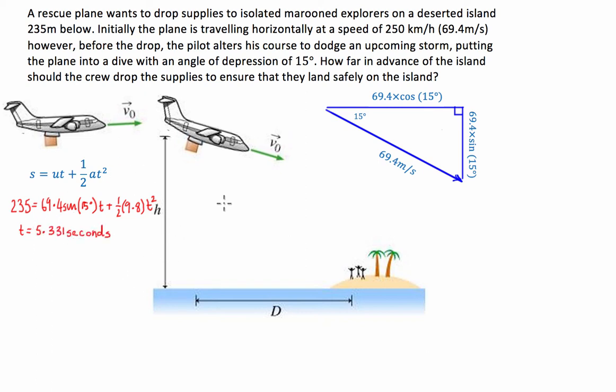So once we've done that, that's going to tell us how long it takes for this package to fall from there to there. Once we've got that, we know that if we haven't got any drag, the velocity in the horizontal direction is going to be constant. So all we're going to have to do is work out how far this package is going to travel with this horizontal velocity for this particular time. So we're going to use the basic formula.